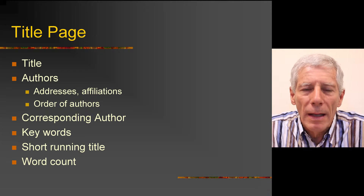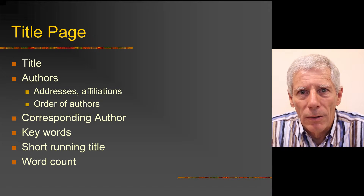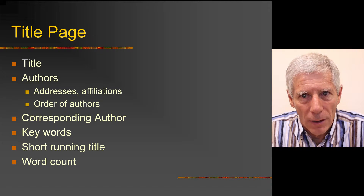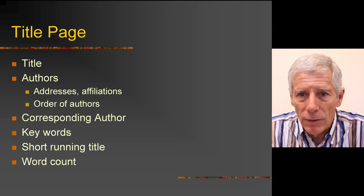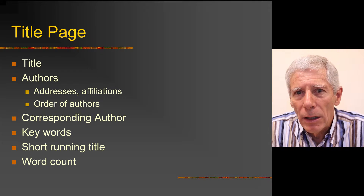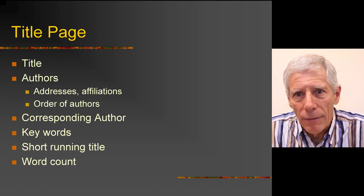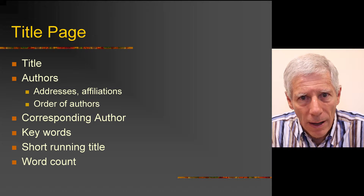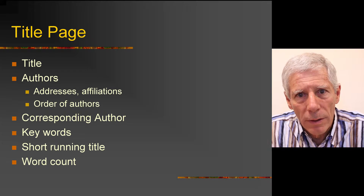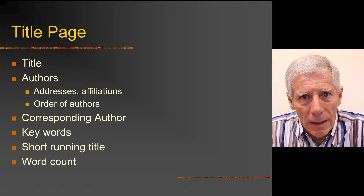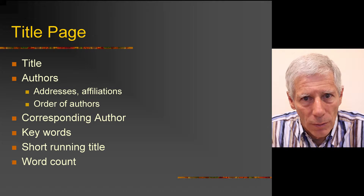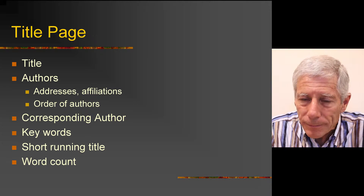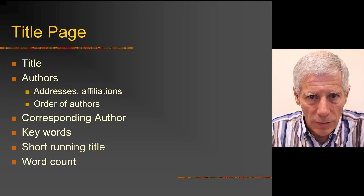Moving on to the title page. This will be used when you submit the article to the journal — it's not part of the actual article itself, but it is important. It includes the actual article title, then a list of the authors, and for each author there'll have to be a section on attribution. This can be done in different ways. Look at the journal you're going to be submitting to as to their style. Often you'll have a list of authors with numbers, and other journals do it different ways, so check your own journal to see which is most appropriate.